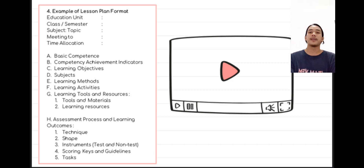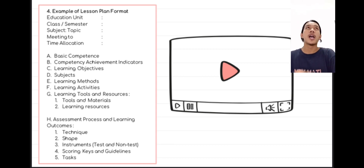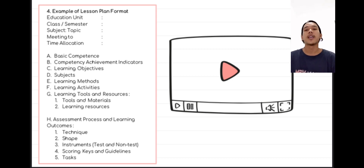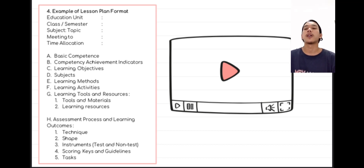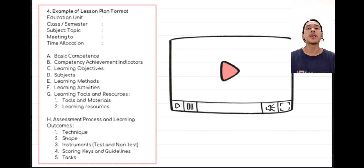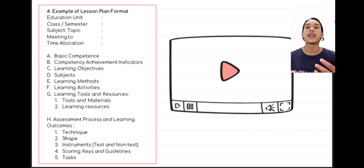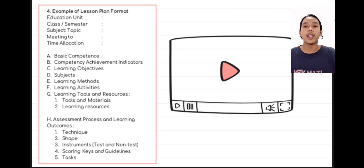Preliminary activities include, for example, the teacher checking student attendance. The core activity is the learning material to be taught. Closing activities can include summarizing the lesson. Also listed under point F are media and teaching materials — tools and learning resources, such as an LCD projector to support the material or textbooks for the material. The last point is point G: assessment of process and learning outcomes, which describes the techniques or ways we evaluate and the results of student learning.